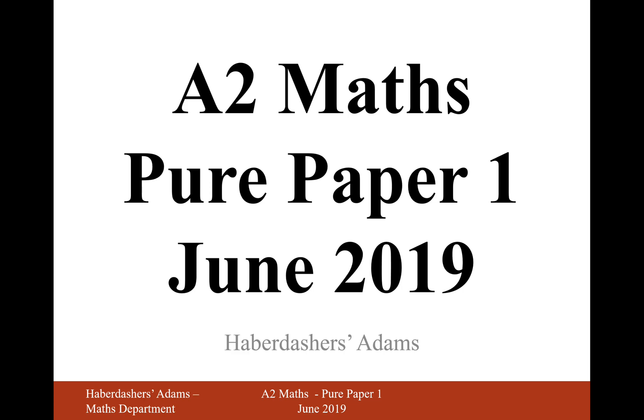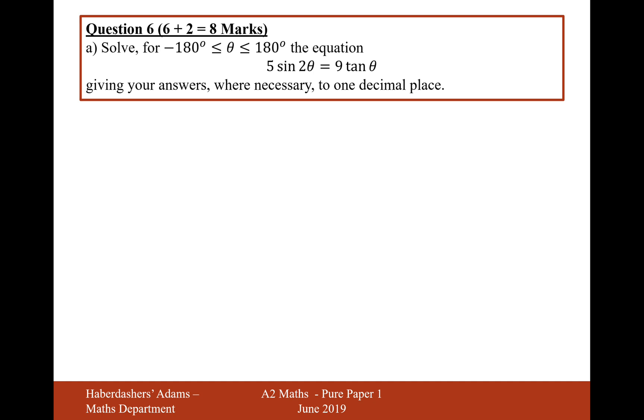Hello there and welcome to June 2019. Here we're working on A2 Maths Paper 1, looking at question 6. Let's get straight stuck into it. Solve for θ in between minus 180 to 180, the equation 5 sin 2θ = 9 tan θ, giving your answer where necessary to one decimal place.